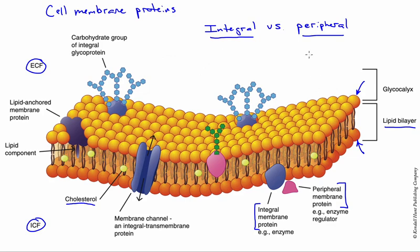If we look at the integral category, these are proteins that are continuously associated with the membrane. There's a broad category of functions there, one of which would be glycoproteins associated with the formation of a glycocalyx. These are the carbohydrate groups that protrude outward, attached to the embedded protein component down in the lipid bilayer.